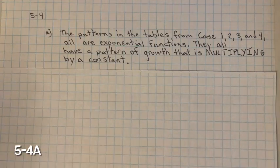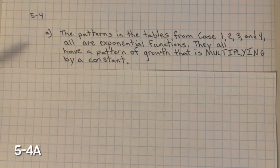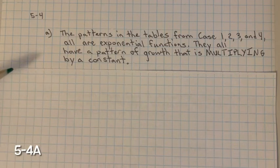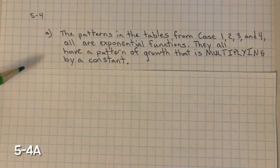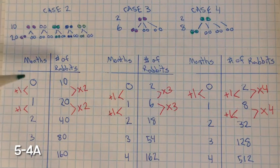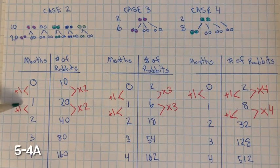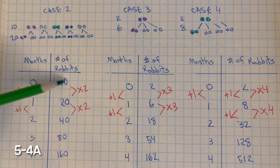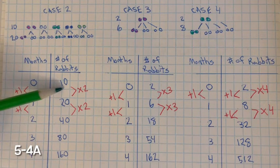The patterns in the tables from case 1, 2, 3, and 4 are all exponential functions. They all have a pattern of growth that is multiplying by a constant. If we look back at the patterns, you can see that for every month, each of them is being multiplied by a number.